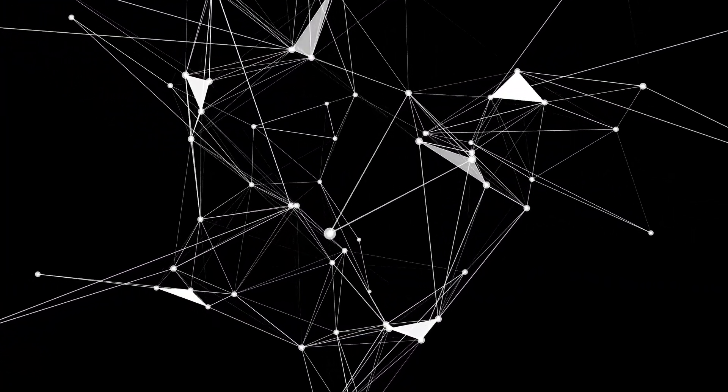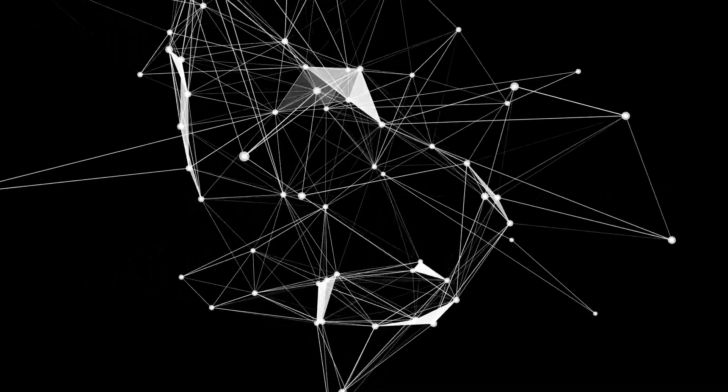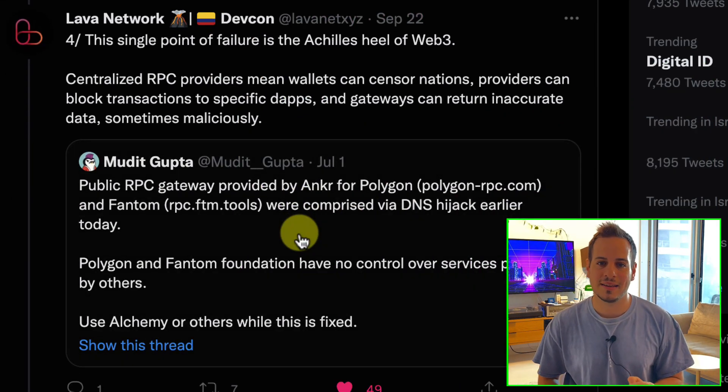We don't want centralized endpoints, we don't want centralization and single points of failure, and somehow this is the stage we're at right now in Web3 — which is quite sad. But we're fortunate to have a protocol like Lava. Lava is building a decentralized marketplace and network that connects consumers who want to get blockchain data — whether reading from the blockchain or sending transactions — with RPC node providers. You could sit at home, buy a server, run an Ethereum node, install a Lava node, and provide RPC services for users.